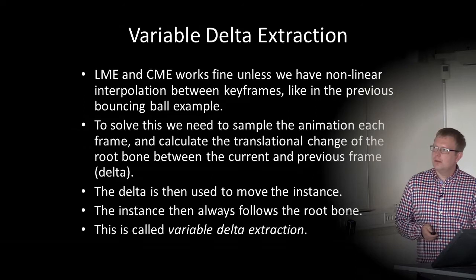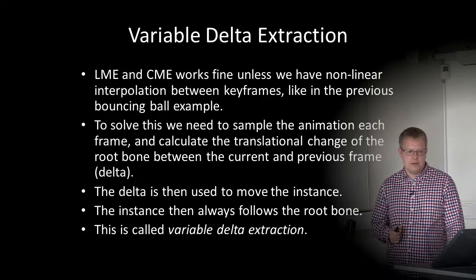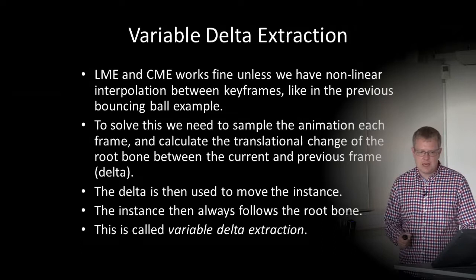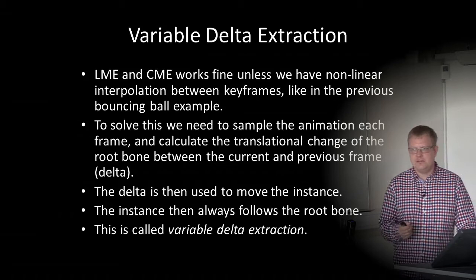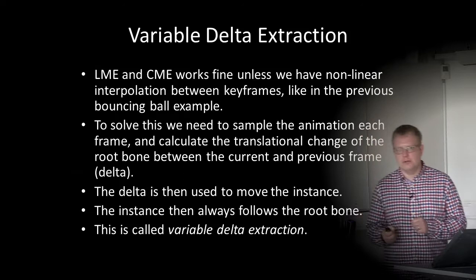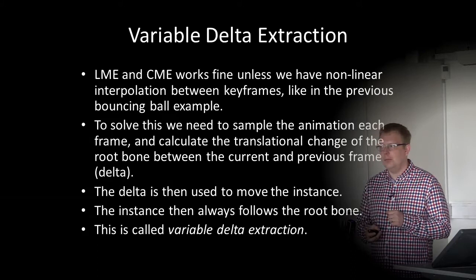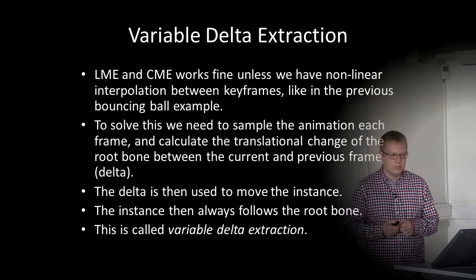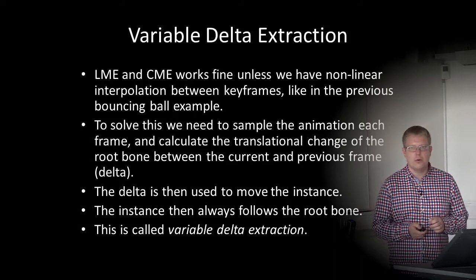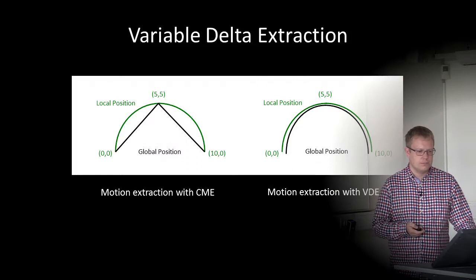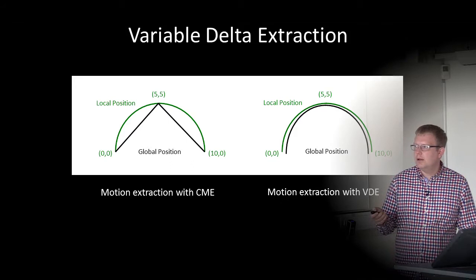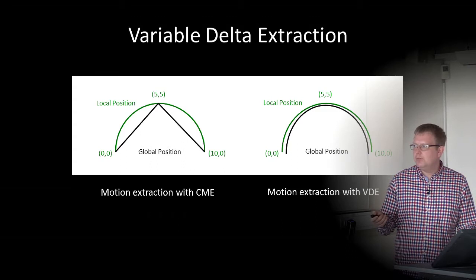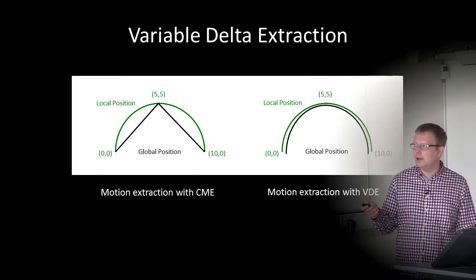Both LME and CME work fine unless we have non-linear interpolation between keyframes, like in the bouncing ball example. To solve this, we sample the animation each frame using, for example, the Bézier curve, and calculate the translation and rotation change of the root bone between the current and previous frame — this is called variable delta extraction. The delta is then used to move the instance, which always follows the root bone. With variable delta extraction, non-linear movement is accurately captured.